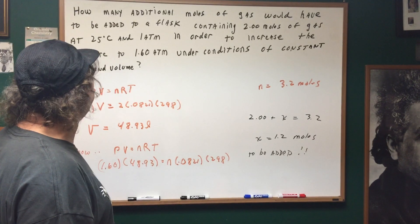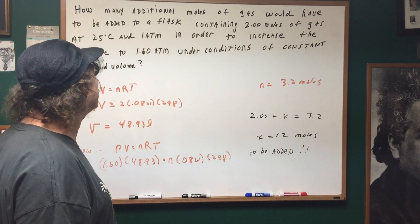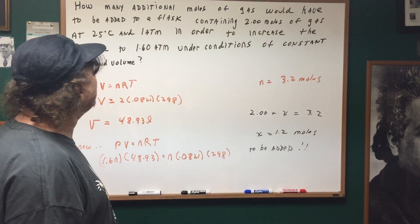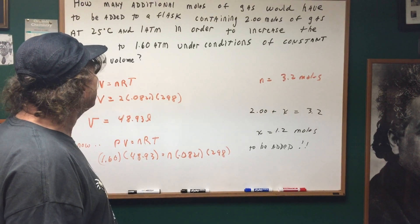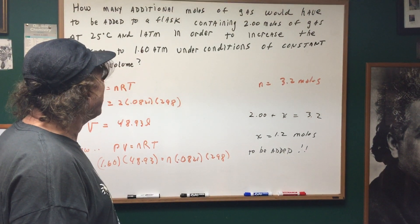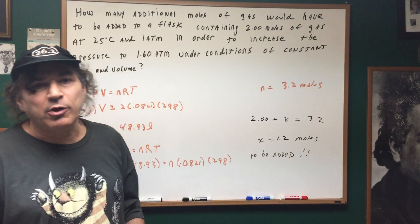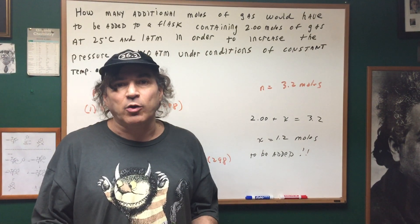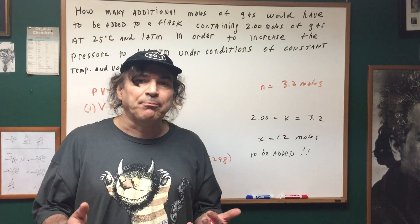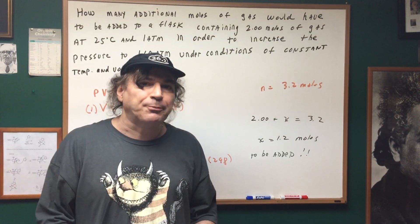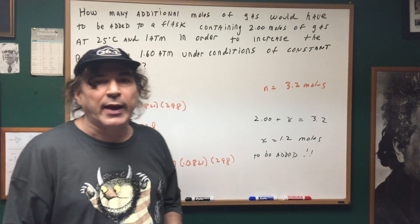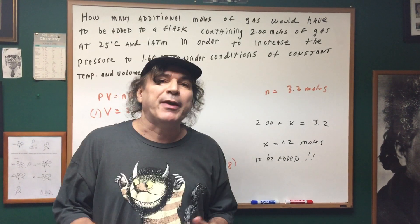containing 2 moles of gas initially at 25°C and 1 atm in order to increase the pressure to 1.60 atmospheres under conditions of constant temperature and volume? So what I want to do is add some additional moles to my flask and move the pressure up to 1.60 atmospheres. Maybe a little bit of overkill,